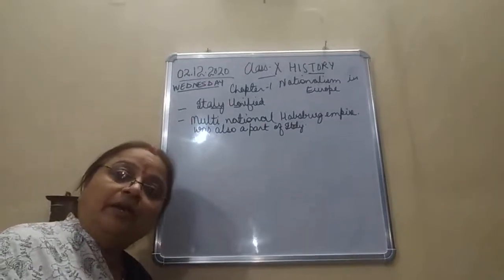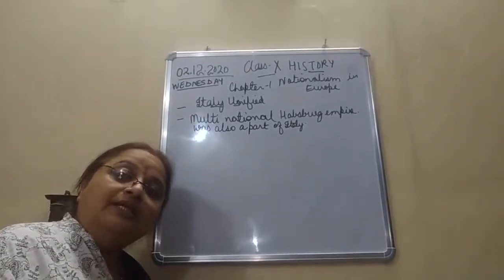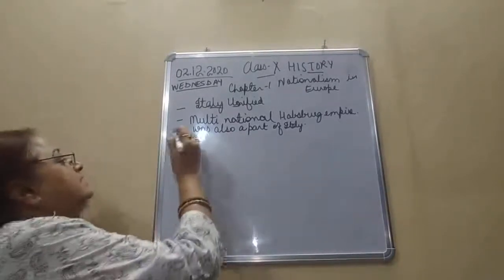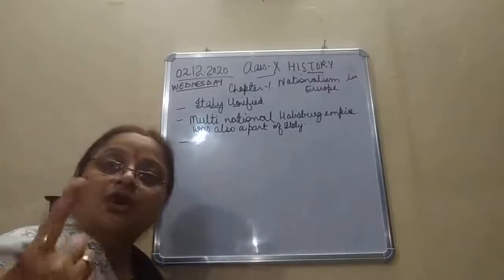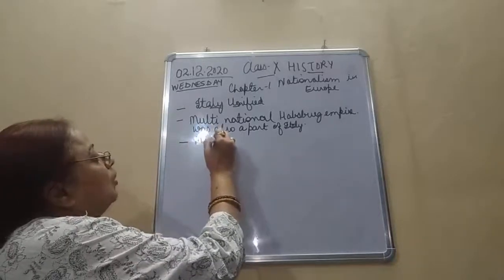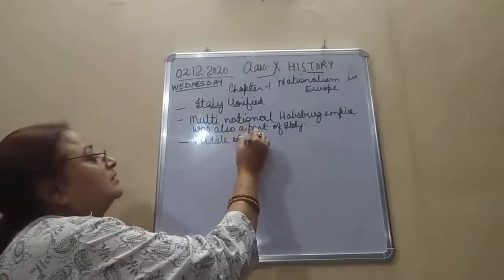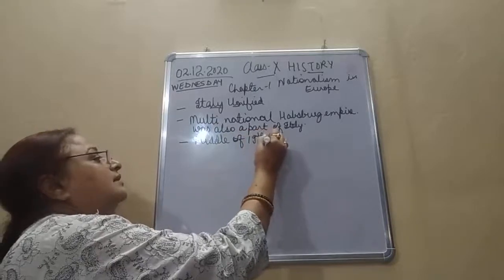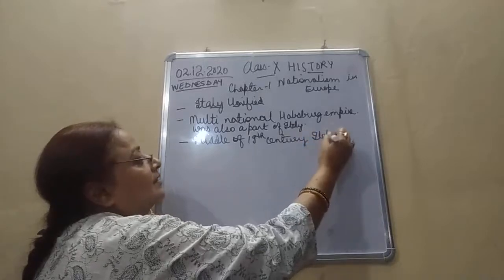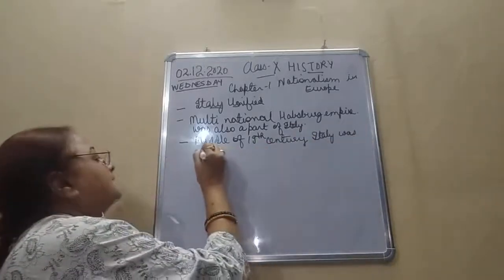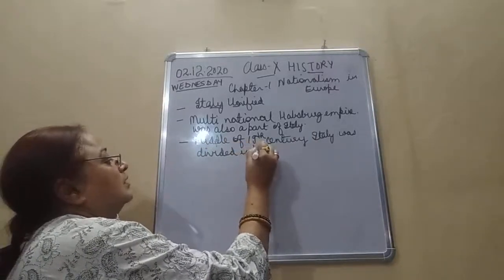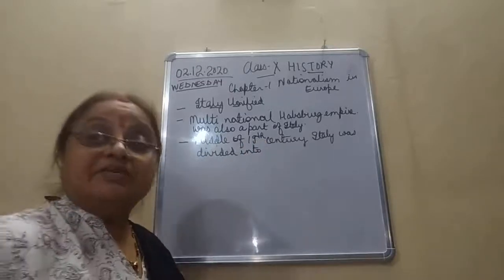Italy was majorly divided into seven states until the middle of the 19th century.